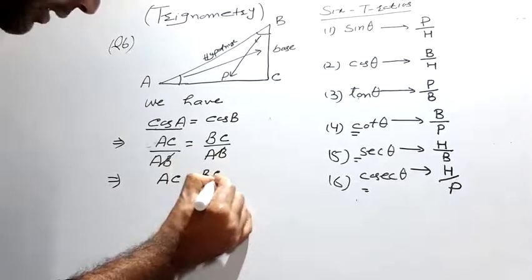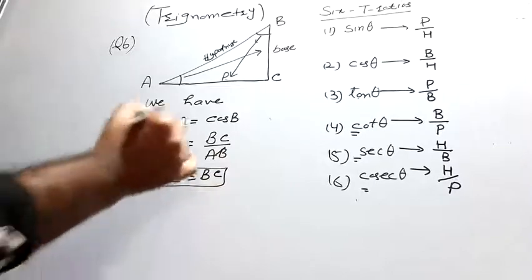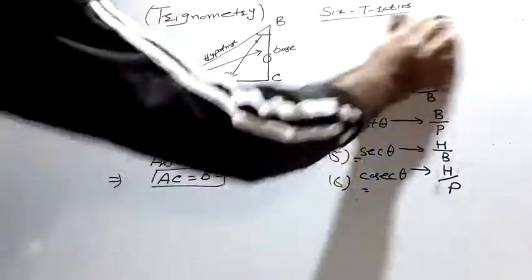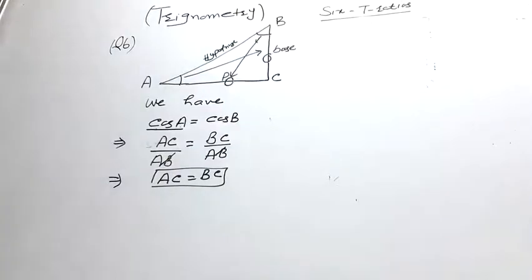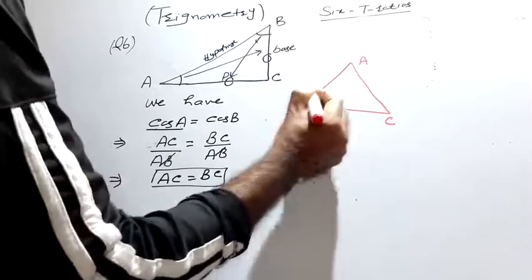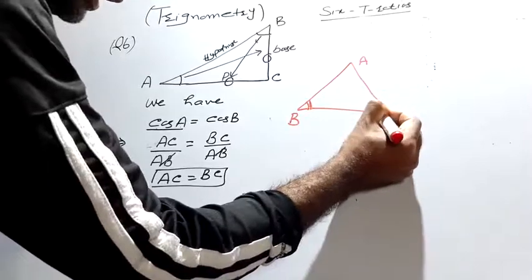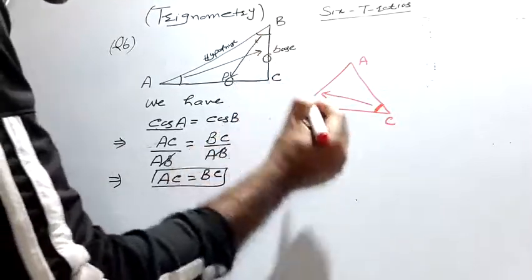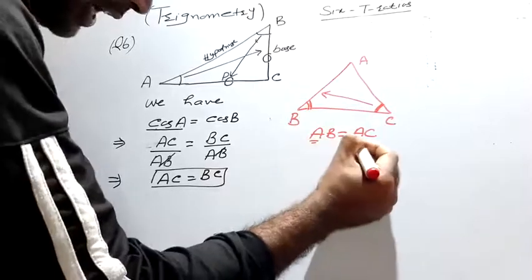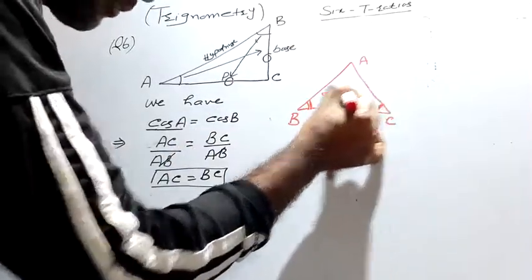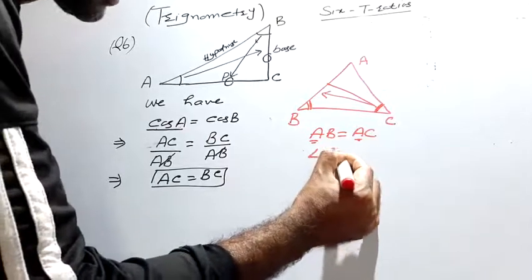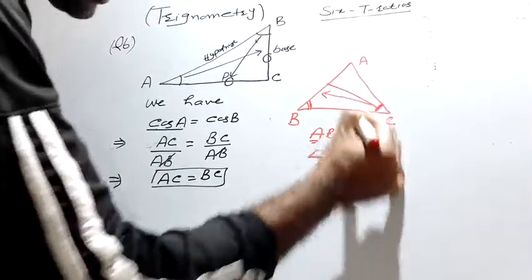Since cos A equals cos B, we get AC upon AB equals BC upon AB. Cancelling AB from both sides, we get AC equal to BC. Now, from class 9 theorem: if two sides of a triangle are equal, then the angles opposite to those equal sides are also equal.